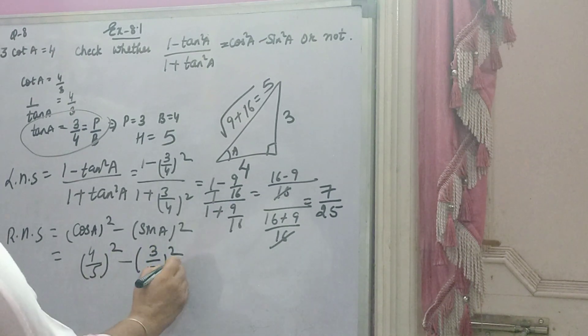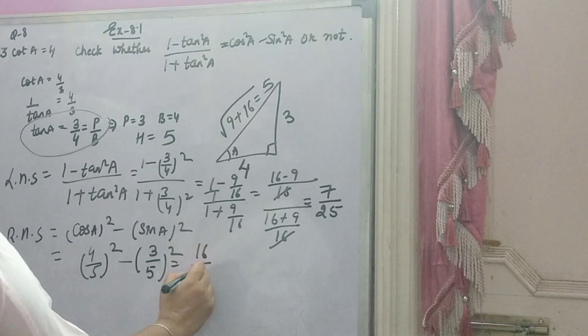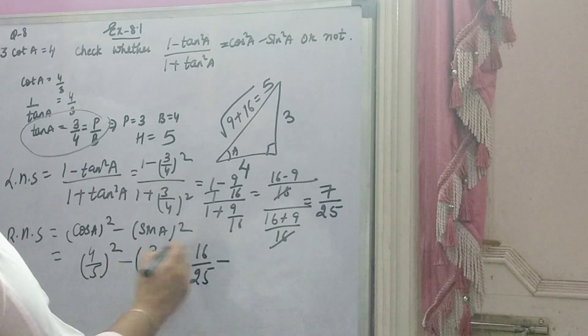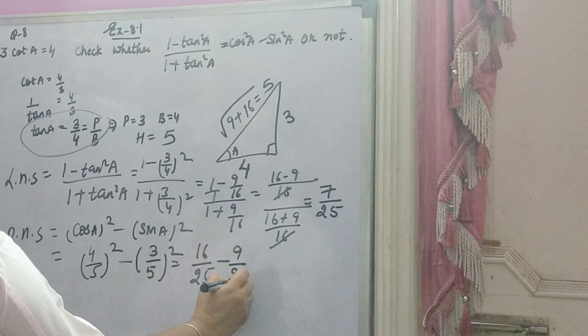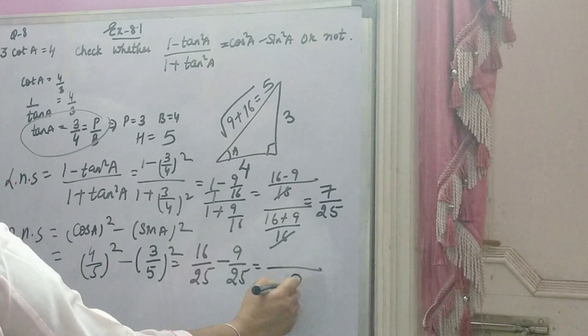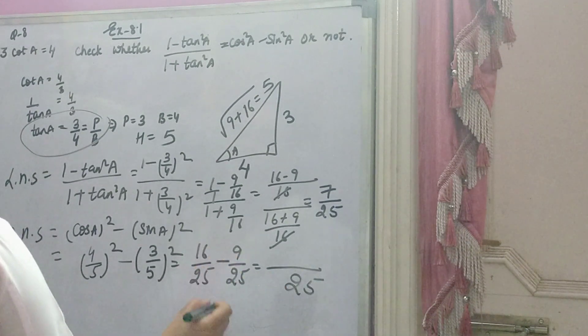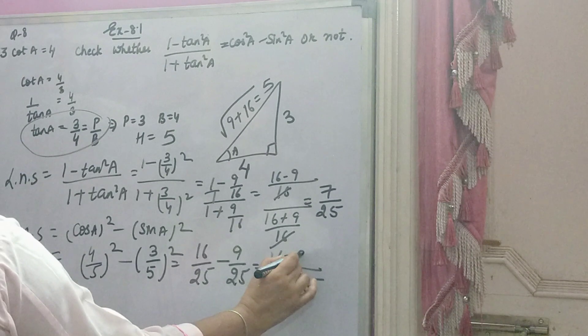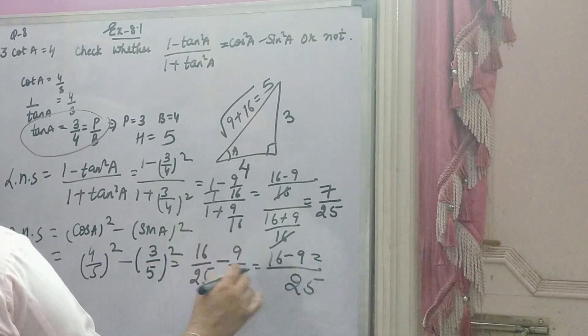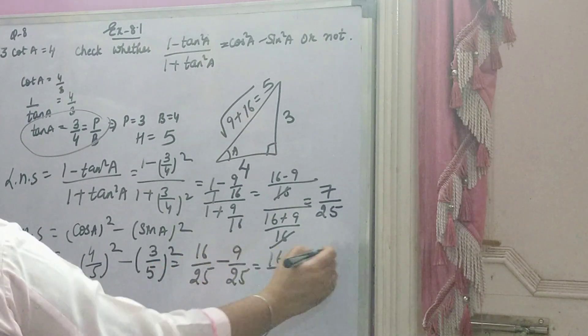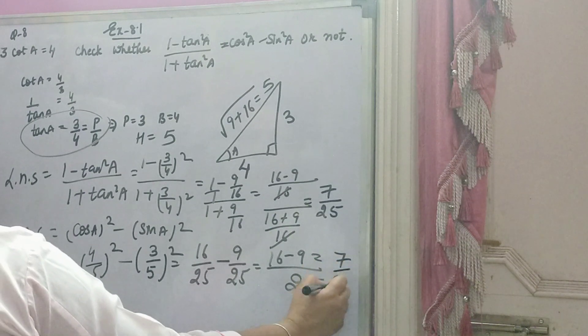4 ka square 16, 5 ka square 25. 3 ka square 9, 5 ka square 25. Alcium le lo, dholo me 25 hai. Denominator same hai, 25 aje ga. Jab denominator same hota hai, toh upar wali values same tariqe se likh jate hai. 16 minus 9, 7 aaghe. 7 over 25.